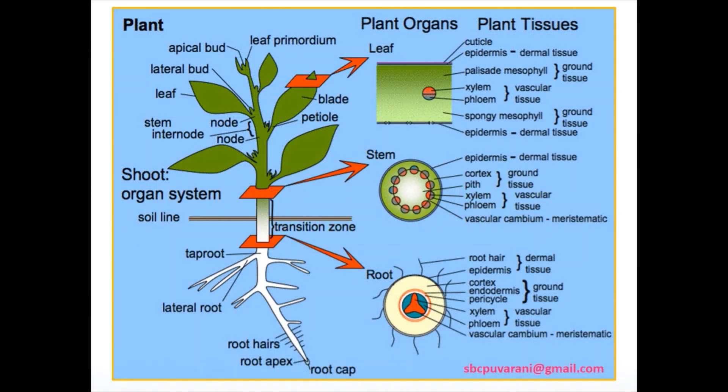A plant is made up of different parts, mainly leaves, stem and root. Leaves collect energy from the sun and make food for the plant using photosynthesis. Stem supports the plant above the ground and carries water and minerals to the leaves. Roots are responsible for transferring the necessary nutrients to the plant.